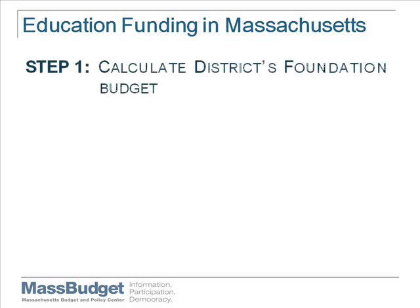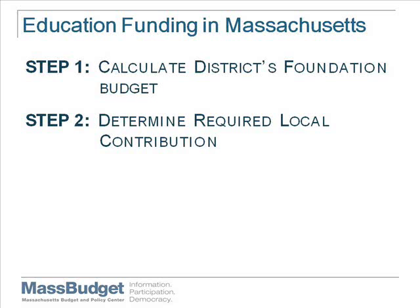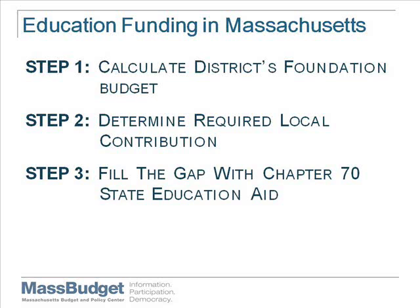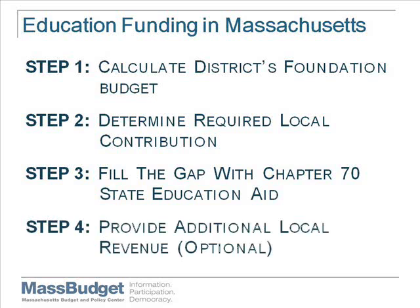So, just to review, education funding for local districts in Massachusetts is determined through four basic steps. Step 1: calculate the foundation budget for providing an adequate education for all children in the district. Step 2: determine the required local contribution towards this foundation amount. Step 3: fill the gap with Chapter 70 State Education Aid. And Step 4: provide additional local revenue where possible. It's important to stress that while this outline accurately describes the formula's basic design, it does not account for a host of technical changes that often complicate each of these four steps. Mass Budget monitors these changes closely, and we often provide detailed analysis through reports available on our website.